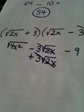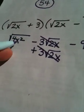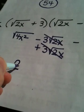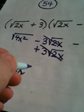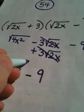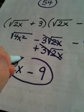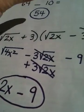When I pull all this together, these two disappear, the square root of 4x squared is 2x, and then we pick up our minus 9, and we're done.